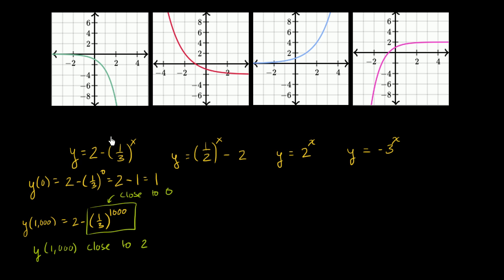As x gets larger and larger and larger, the 1 third to the x part gets closer and closer to 0. So you have 2 minus something approaching 0, meaning y is going to approach 2. It's clearly this graph on the right — as x gets larger and larger, y is getting closer and closer to 2. So this graph is y equals 2 minus 1 third to the x power.